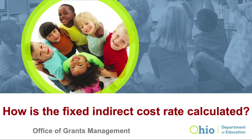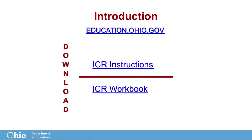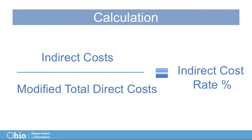Welcome to the webcast: How is the Fixed Indirect Cost Rate Calculated? Detailed information about the Indirect Cost Rate Proposal process can be found at education.ohio.gov by searching 'Indirect Cost Rate Proposal.' Please download a copy of the Instructions and Workbook now for reference while listening to this instructional video. Let's begin by looking at how the Indirect Cost Rate is calculated.